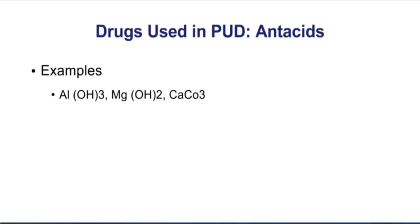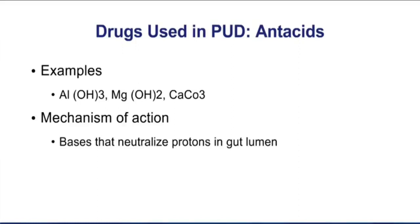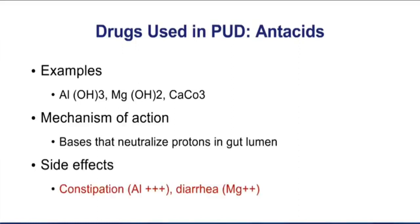If you get a question asking what is the most rapid way to relieve the pain associated with peptic ulcers, the answer is take an antacid. Antacids have the most rapid onset of any of our medications — drugs like aluminum hydroxide, magnesium hydroxide, or calcium carbonate, and sometimes we combine these in the same product. The antacids simply neutralize protons in the gut lumen. Aluminum hydroxide causes constipation, whereas magnesium can cause diarrhea, so certain products have combined both aluminum and magnesium to offset these GI side effects.